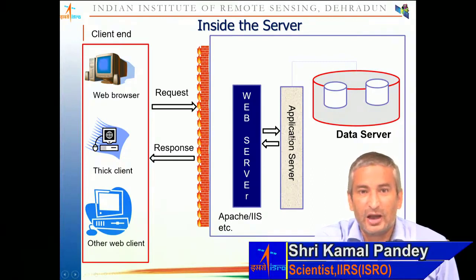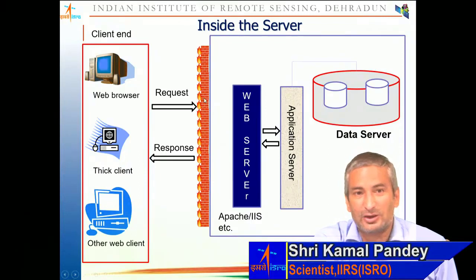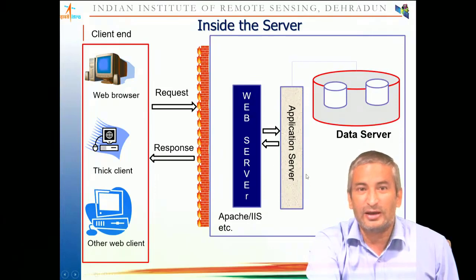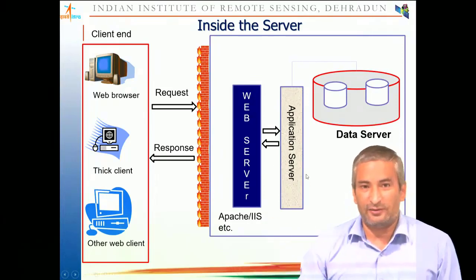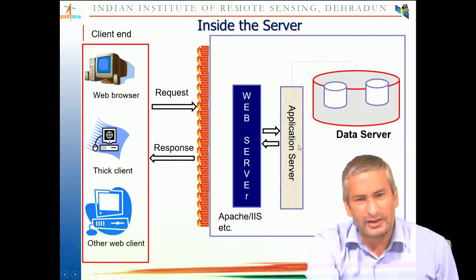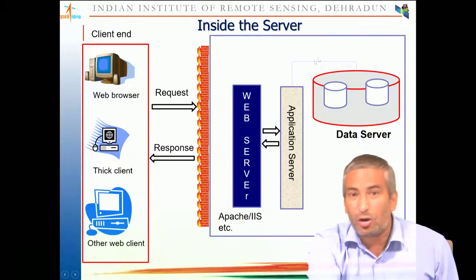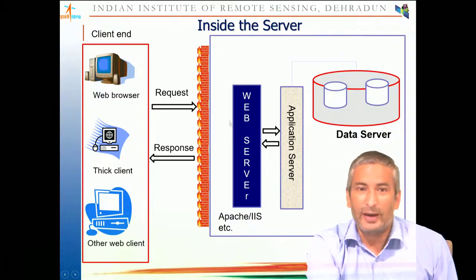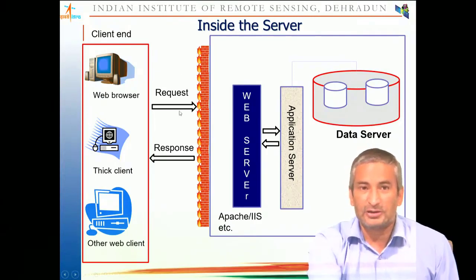A GIS server is a type of application server that processes GIS requests, map requests, or image requests. Application server is a generic name — just like different brands of oil, we can have different types of application servers: a GIS application server, a business application server, an economics-related application server. The web server can interact with all of those. If a request is for GIS, it goes to the GIS application server; if it's a banking request, it goes to the banking application server.